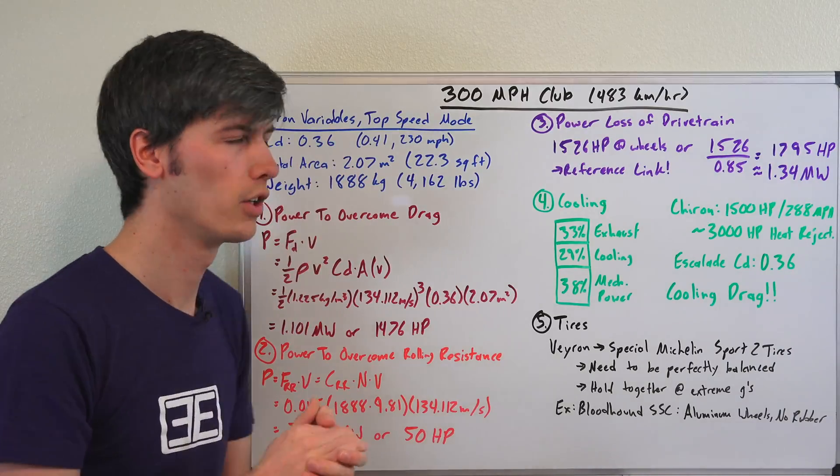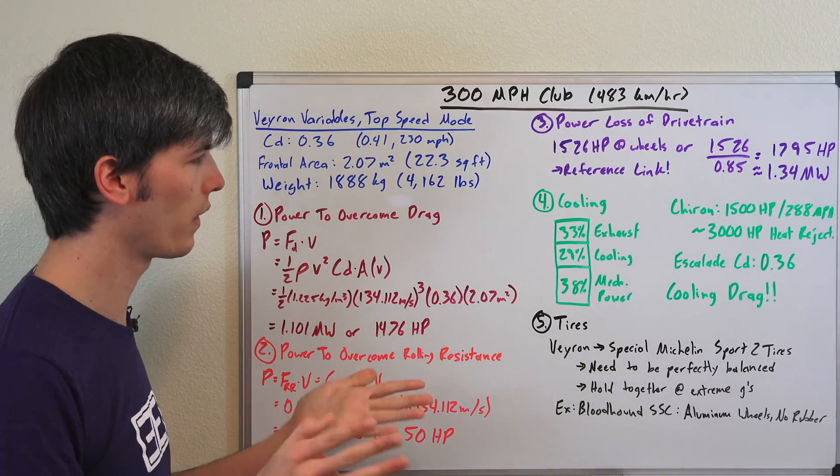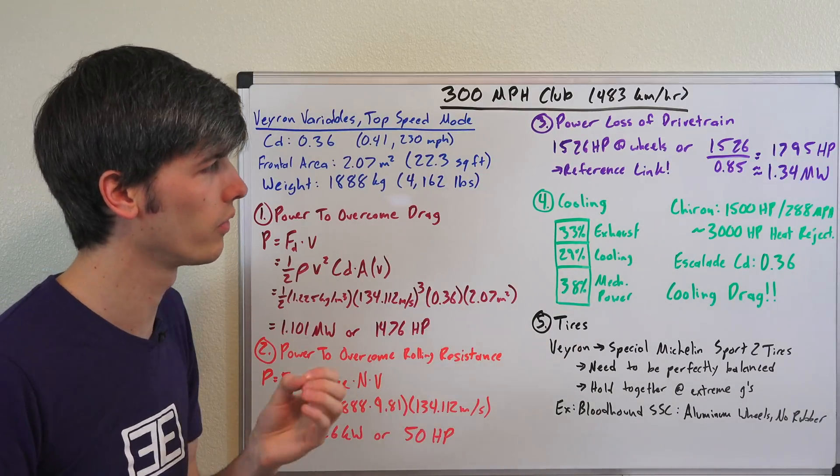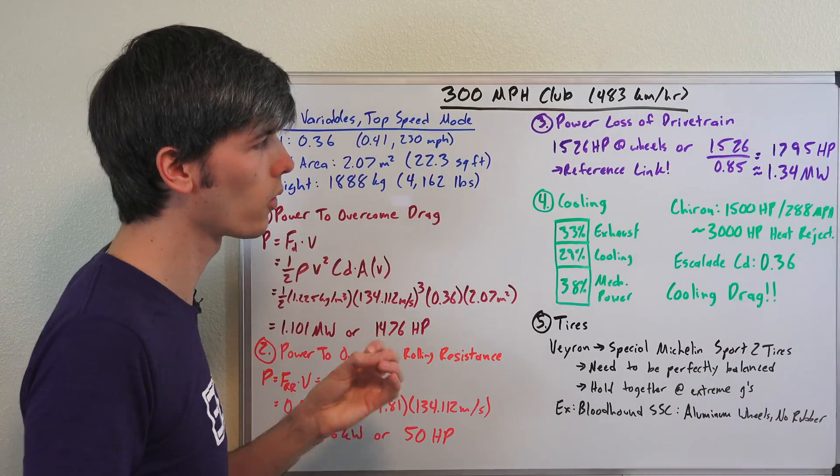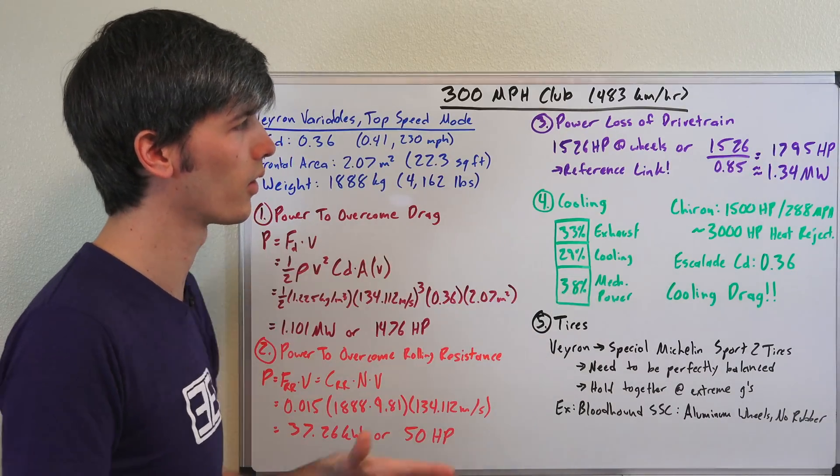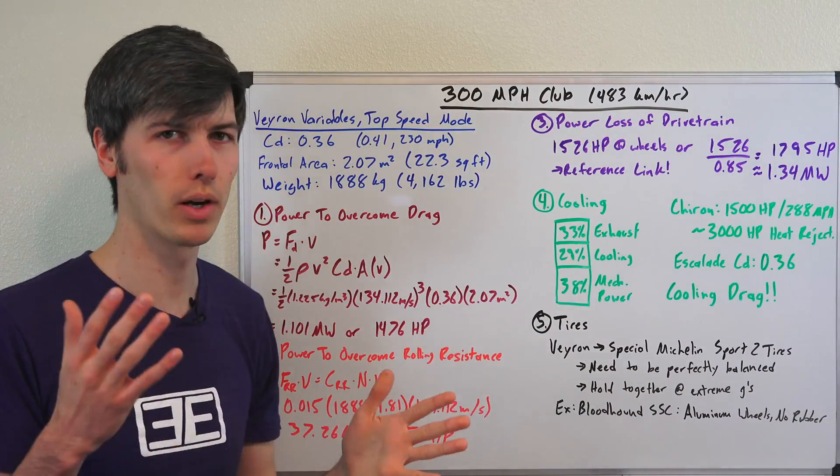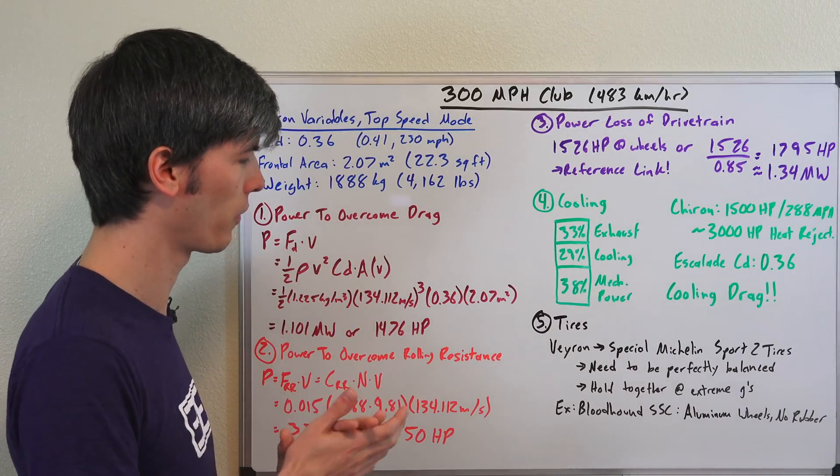So if you could lower this, you could reach that top speed with significantly less power, but it's very difficult to do. So you could theoretically create a production vehicle that doesn't have adequate cooling, which has a very low drag coefficient and could get to 300 miles per hour with far less than 1800 horsepower. But it would probably overheat, and it wouldn't last very long, and you wouldn't want to put a warranty on that vehicle because it's going to overheat and fail.